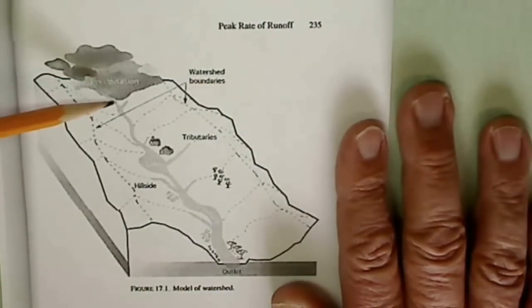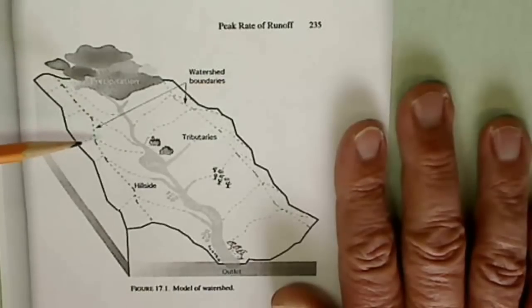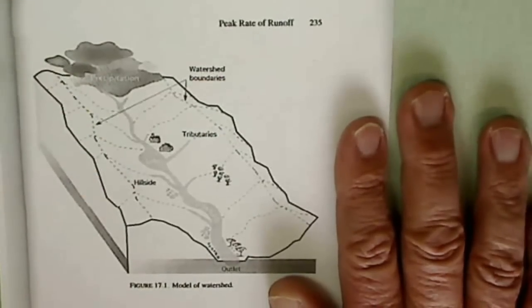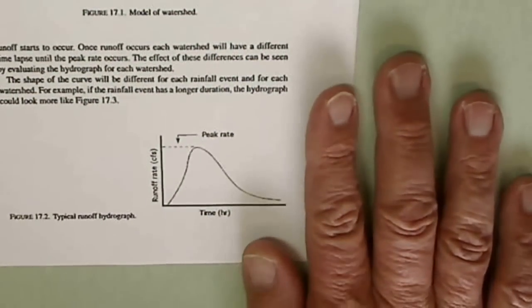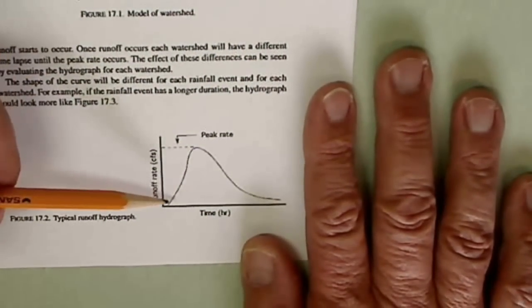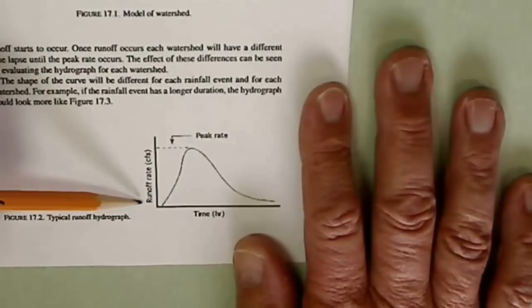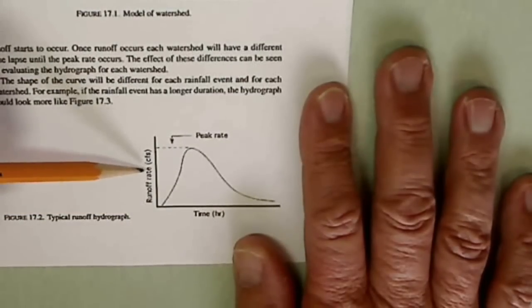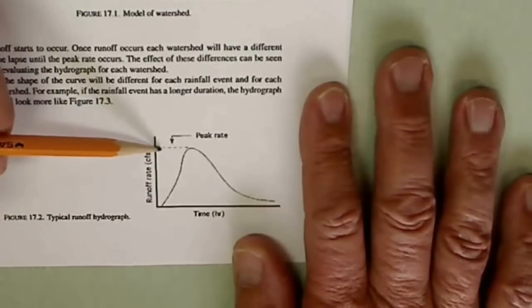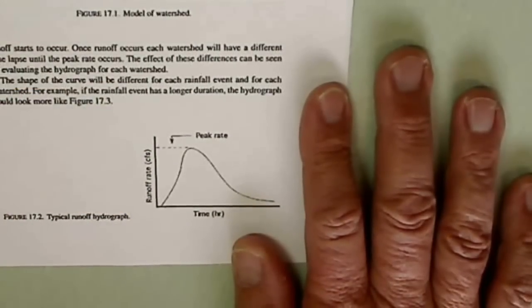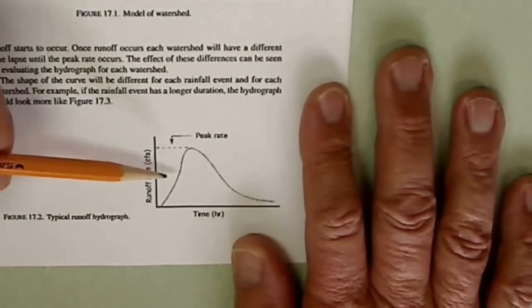And when it starts, we're not going to receive any runoff immediately. It's going to take a little while for that to collect and occur. So what happens is we actually have a situation that looks like this. This is a hydrograph. And what we would see is that the runoff rate in cubic feet per second, even though it starts raining right here, you see nothing is running off immediately because all of that material has to collect.